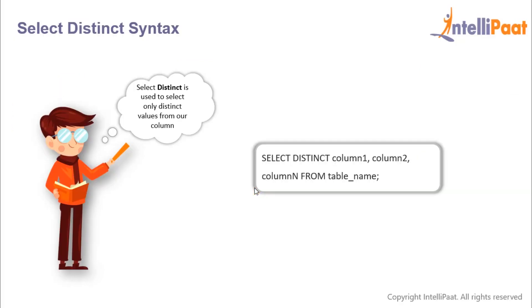Now let's look at the SELECT DISTINCT statement. A column often contains many duplicate values, and sometimes we'd want to extract only the distinct values from the column — this is where SELECT DISTINCT comes in. The syntax is pretty much the same as SELECT; the only difference is we follow up the SELECT keyword with the DISTINCT keyword.